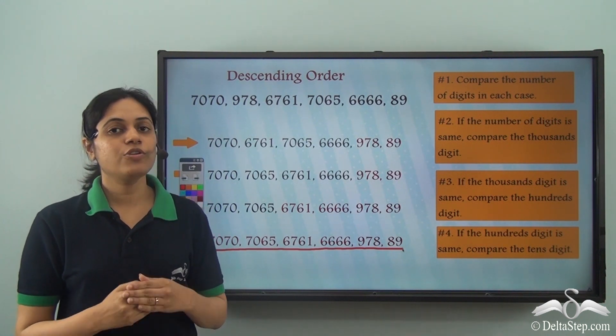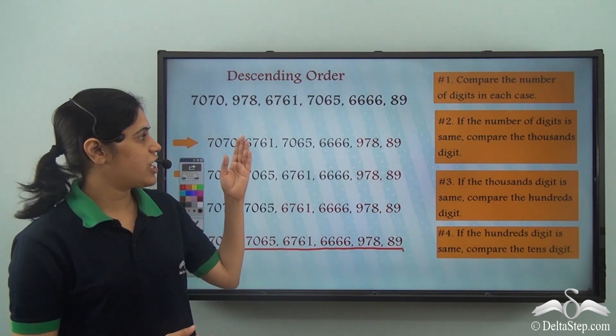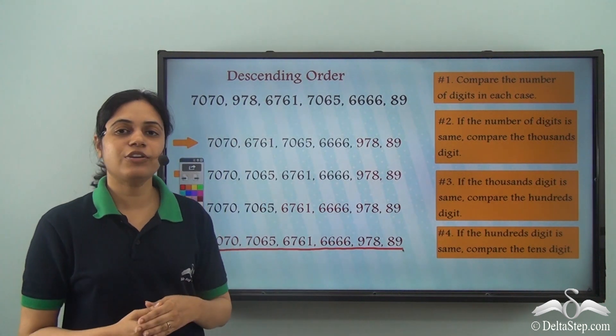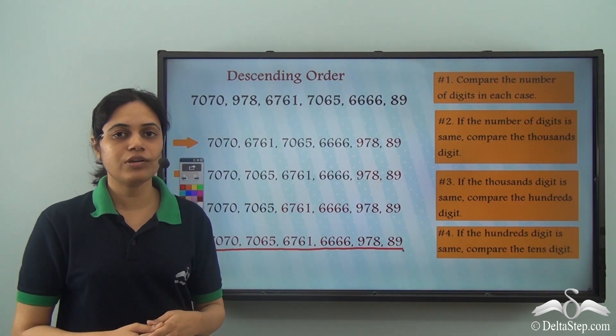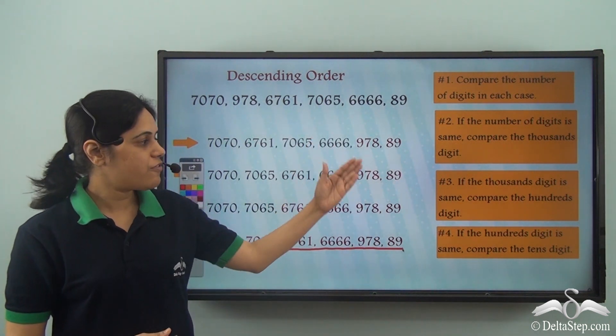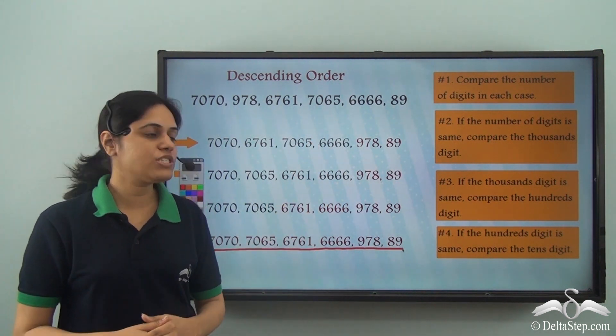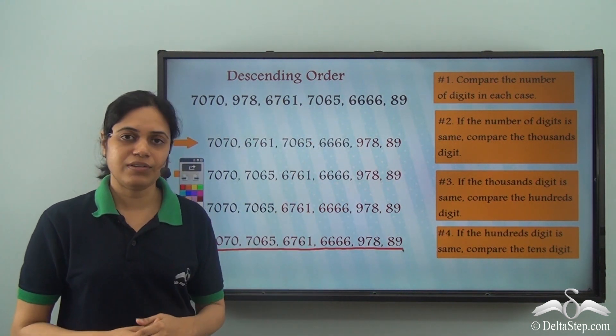So this is how you can arrange any given set of numbers in descending order by following the rules one by one.